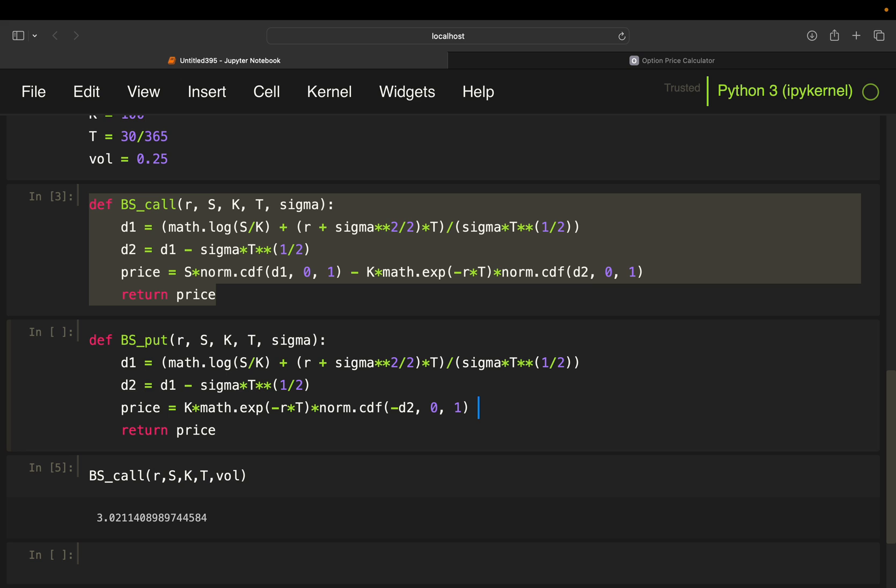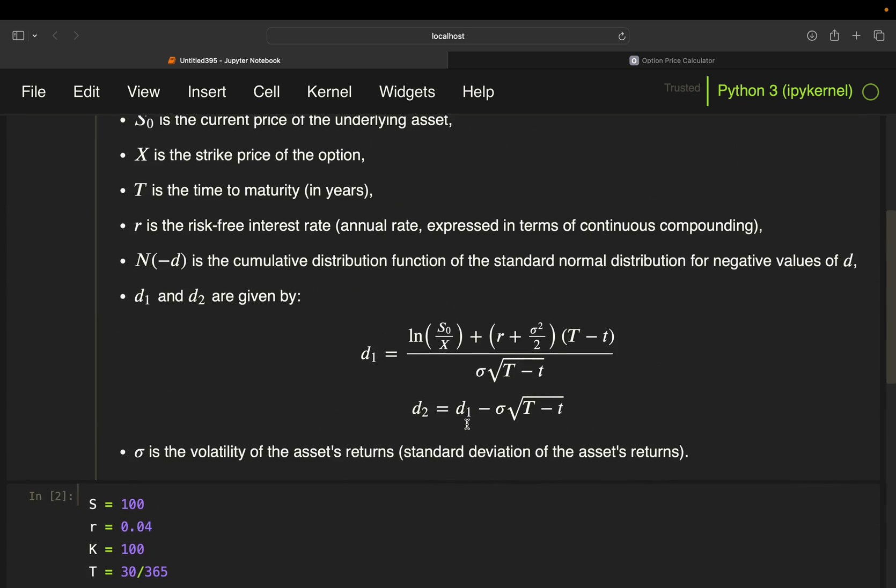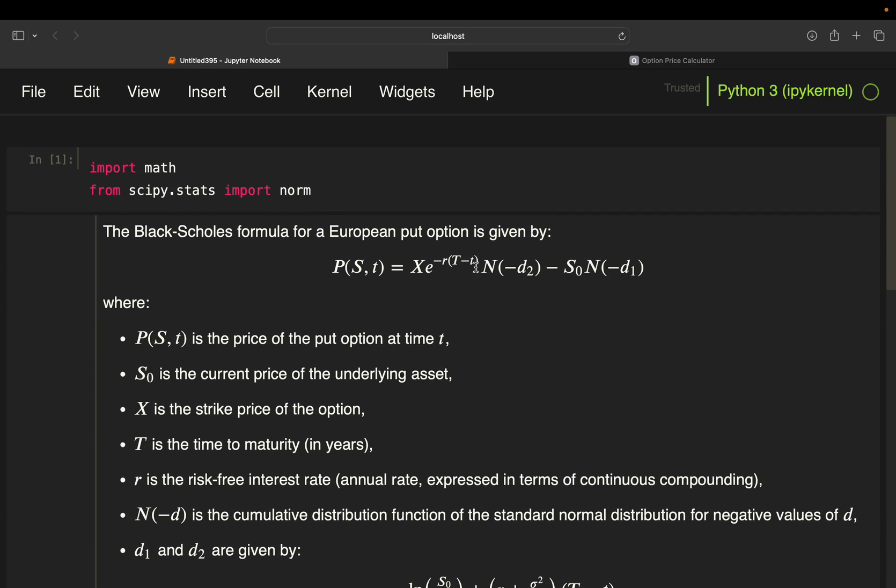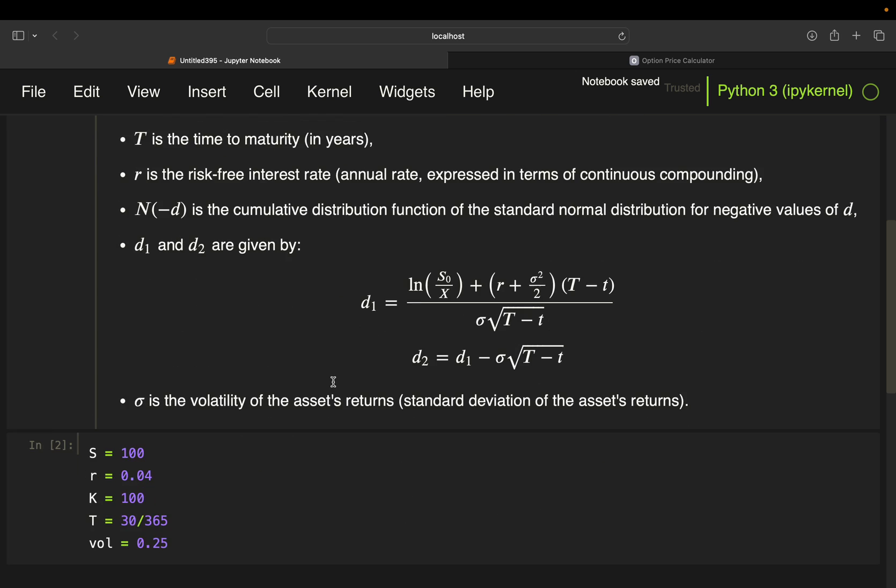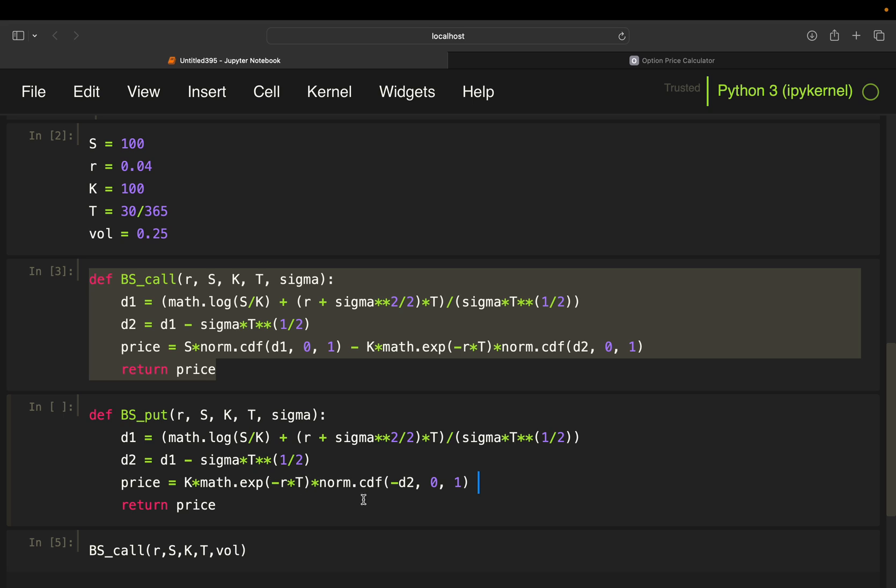With that, you have strike discounted times CDF of minus D2, you got it here, CDF of minus D2, and then minus,